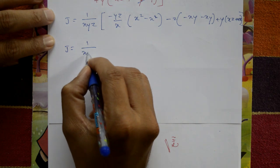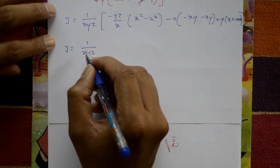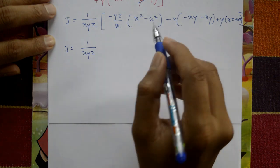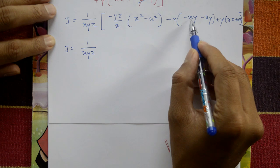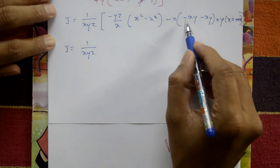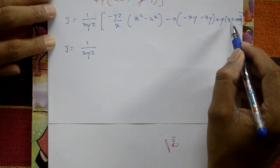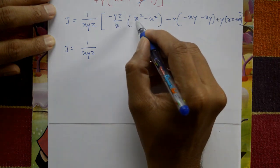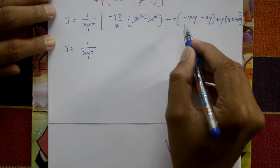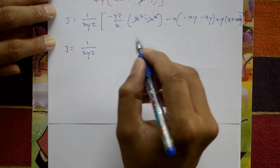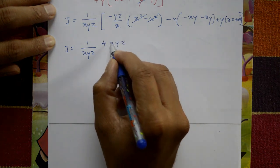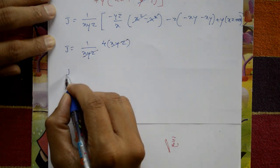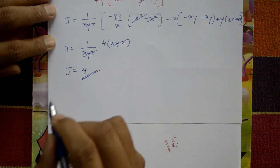J equals 1/(xyz), and in the numerator: two times xy plus two times xyz and two times xz — combining gives four times xyz in the numerator. The xyz in the denominator cancels with xyz in the numerator, leaving J = 4. This is the required answer.